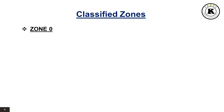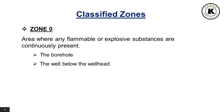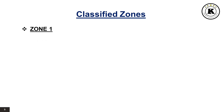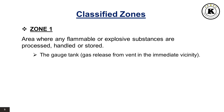Zone 0 is the area where any flammable or explosive substances are continuously present. For example, the borehole and the well below the wellhead. Zone 1 is the area where any flammable or explosive substances are processed, handled, or stored. For example, the gauge tank and gas release from the vent in the immediate vicinity.